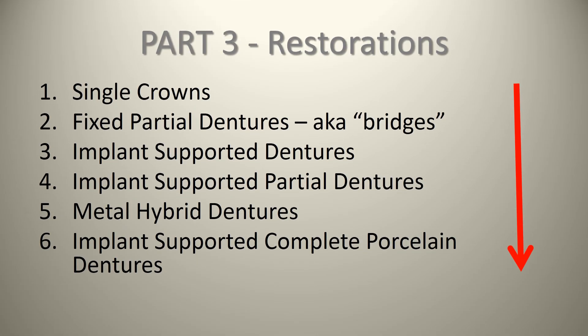In Part 3, we're going to go over restorations. As you can see from this diagram, we're going to start off by talking about things that are relatively simple — single crowns — and then progress downwards. The red arrow on the right indicates the increased complexity and increased skill required to do bigger cases, including experience. For people first starting out, you want to start with something simple like a single crown, then progress to a bridge, then to implant-supported removable dentures and partial dentures, before moving to fixed options like metal hybrid dentures and implant-supported complete porcelain dentures.